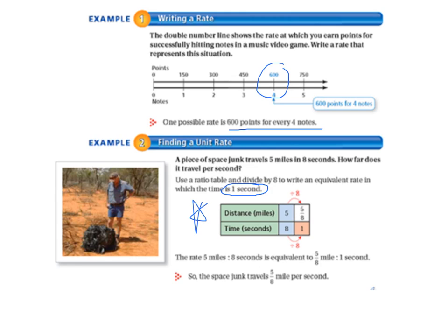So our table looks like this. We have distance in miles, and we know that it goes 5 miles in 8 seconds. So our rate is 5 eighths per 1 second. And we got to that unit rate by dividing both numbers by 8. Because we can see that in order to get 8 to be 1, which is what we want, we have to divide it by 8. So if we do that to one of our numbers, we have to do that to both of our numbers. So 5 divided by 8 is 5 eighths. So the rate 5 miles to 8 seconds is equivalent to 5 eighths miles to 1 second. So the space junk travels 5 eighths of a mile per second.